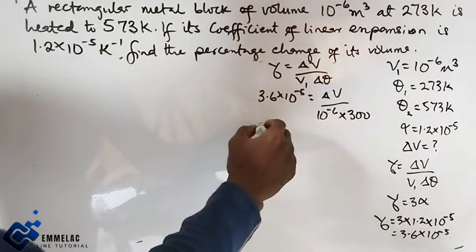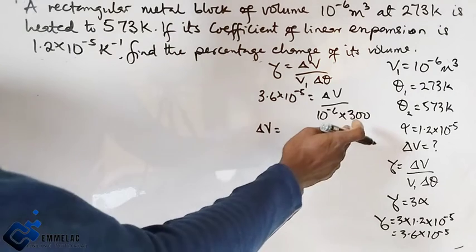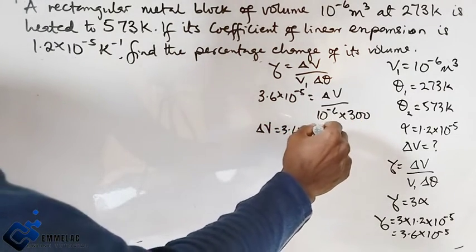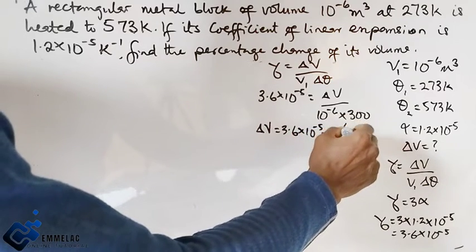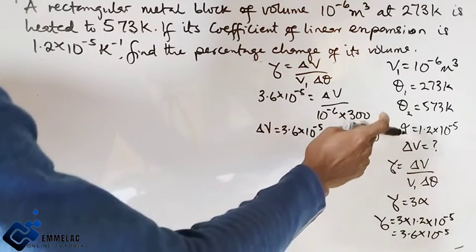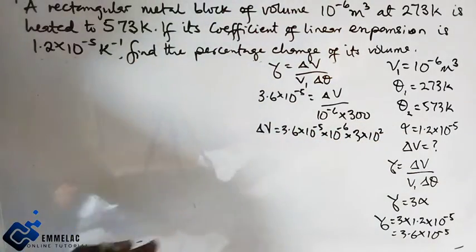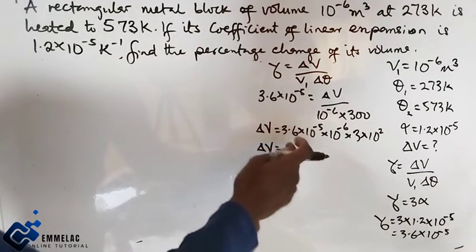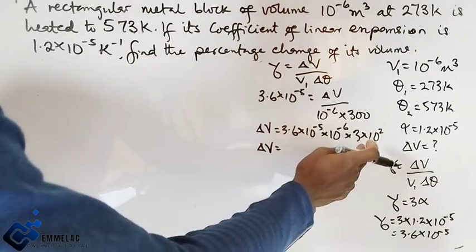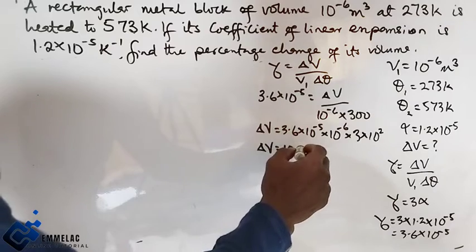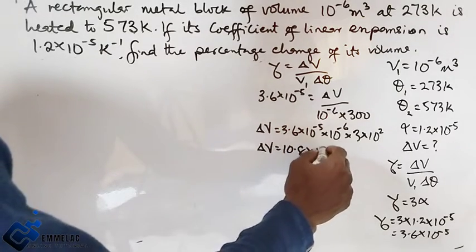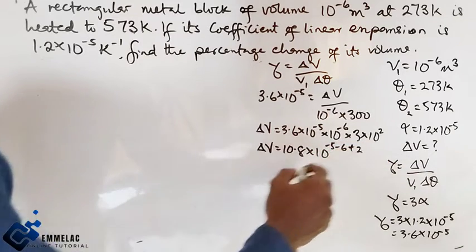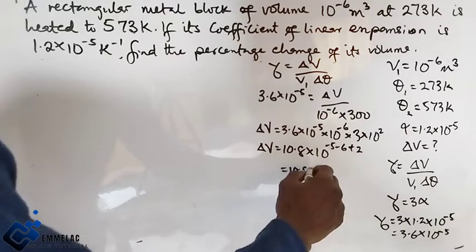Moving forward, change in volume will now give us: multiplying these terms we have 3.6×10^-5 × 10^-6 × 3×10². Converting this to standard form, we have 3 times 3.6 which gives us 10.8×10^(-5-6+2).